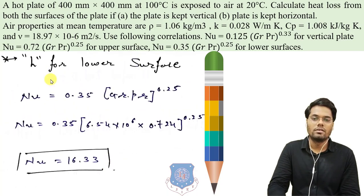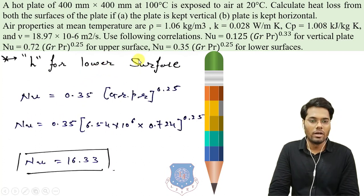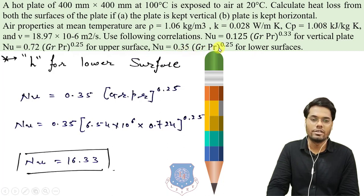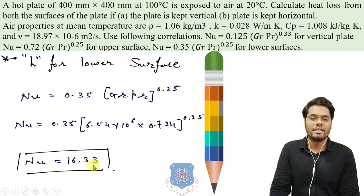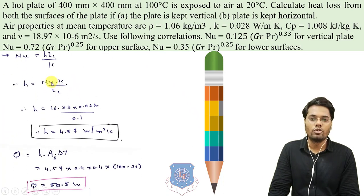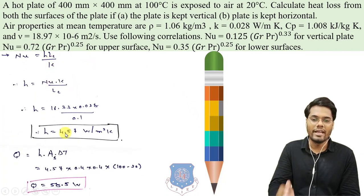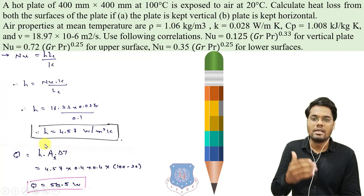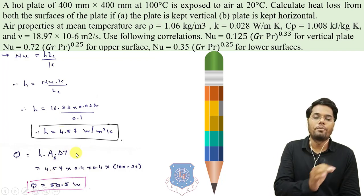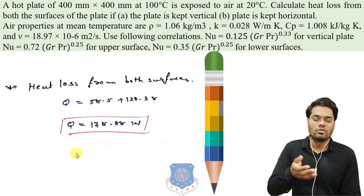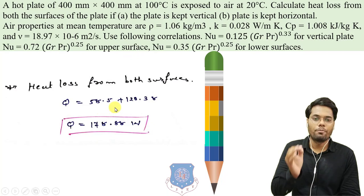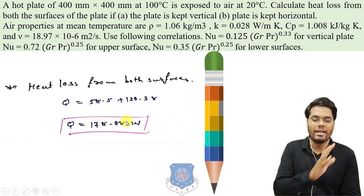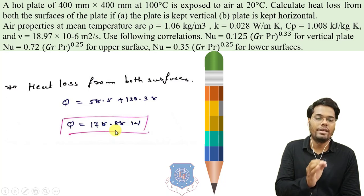Similar calculation is done for the lower surface. For the lower surface, the correlation between Nusselt, Grashof, and Prandtl is 0.35·(Gr·Pr)^0.25. Using this correlation gives Nusselt = 16.33. Solving Nu = H·Lc/k gives H = 4.57 W/m²K. Using Q = H·A·ΔT gives Q = 58.5 W. The total heat loss from both upper and lower sides is 58.5 + 120.38 = 178.88 W.